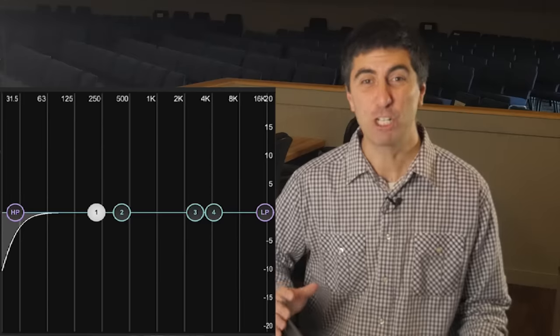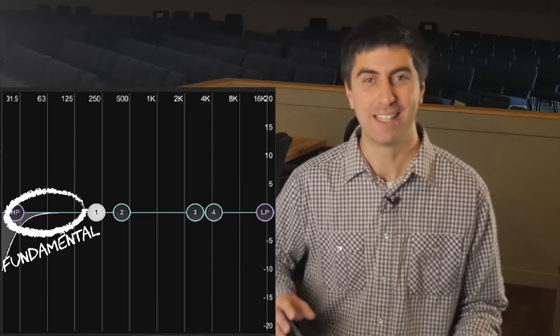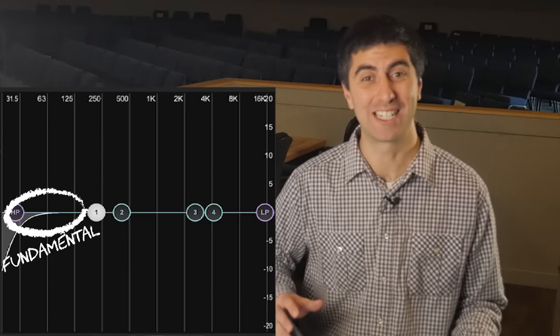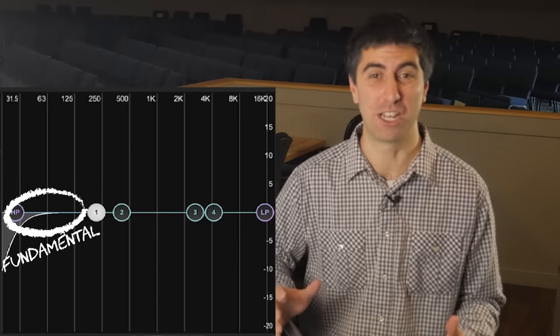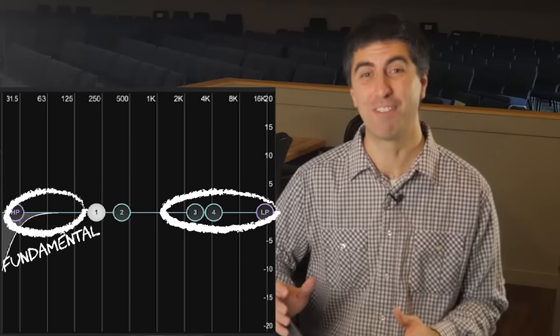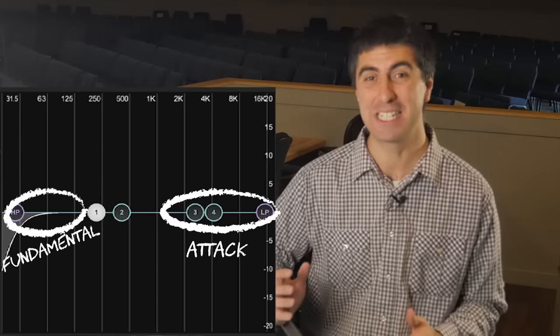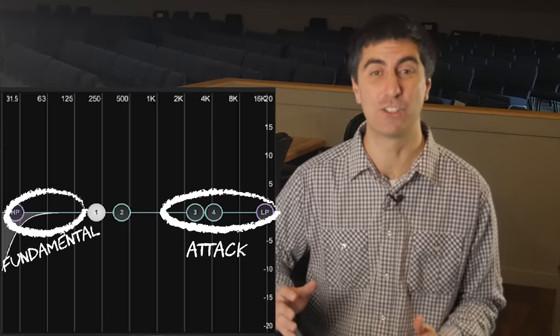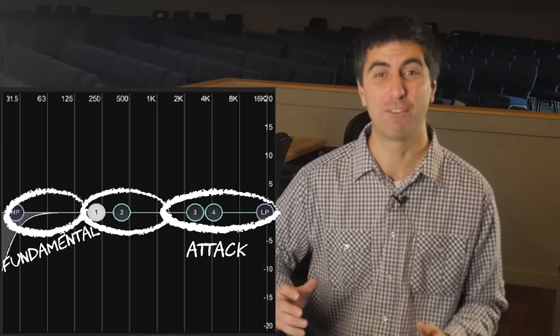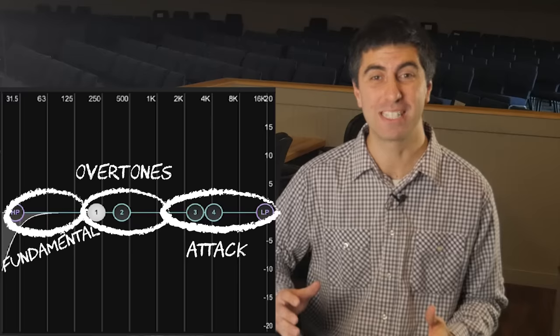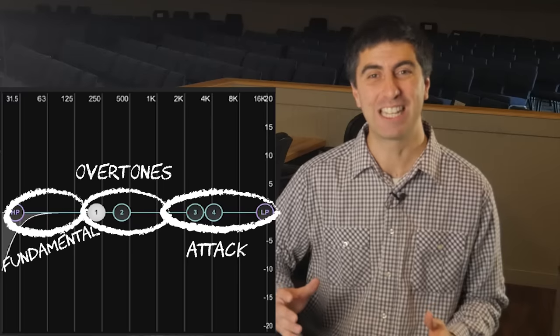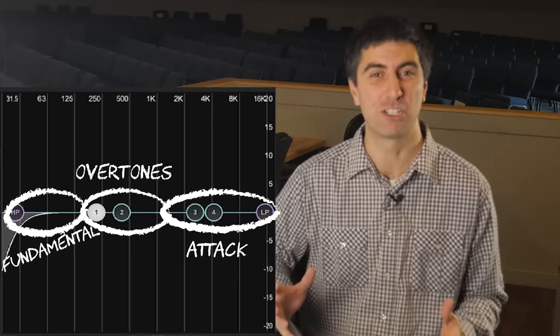Before we get started on specific drums, it's important to understand what happens with every drum. Every drum has a fundamental frequency — this is the lowest note that the drum resonates at, related to how the drum is tuned and the size of the shells. On the top end we have the attack, a high frequency smack from the stick or hand hitting the drum. In between there we have the drum's tone — the overtones and resonant frequencies above the fundamental that give the drum its feeling and character.